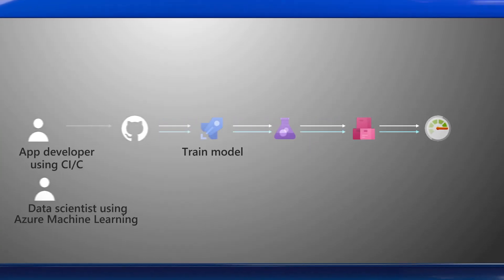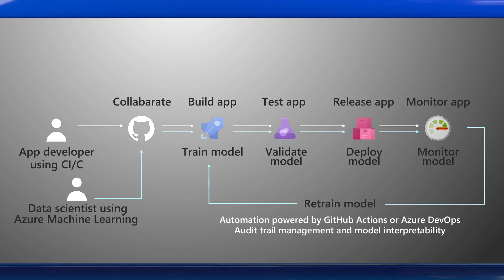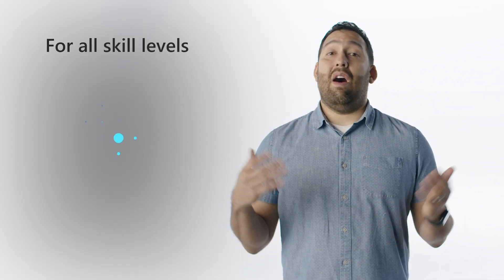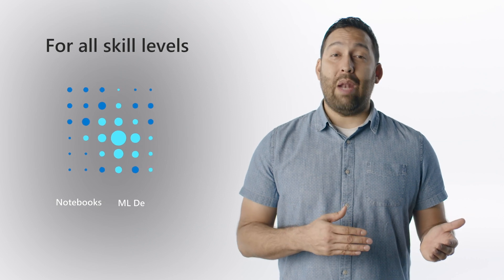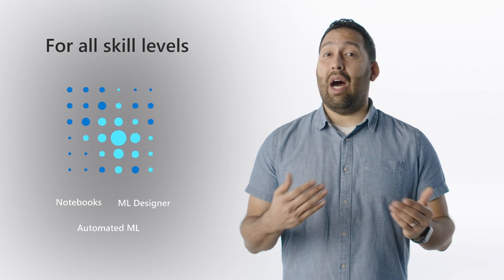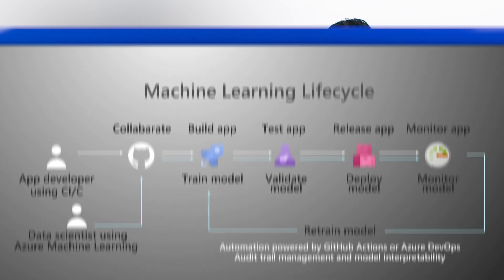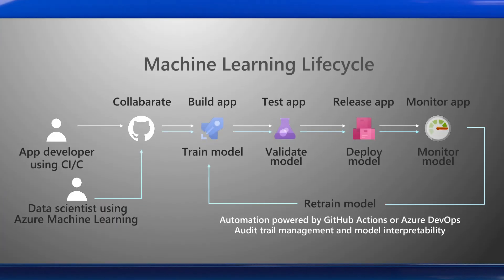Finally, Azure Machine Learning empowers developers and data scientists with a wide range of productive experiences for building, training, and deploying machine learning models much faster. Accelerate time to market and foster team collaboration with industry-leading ML Ops, which is DevOps for machine learning. Innovate on a secure, trusted platform designed for responsible machine learning — with productivity built-in for all skill levels. Code with built-in collaborative notebooks and one-click Jupyter experience. Use drag-and-drop designer or automated machine learning for accelerated model development. It also has robust ML Ops capabilities that integrate with existing DevOps processes and help manage the complete machine learning lifecycle.